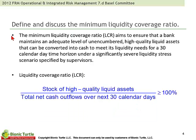The first topic in Basel III is the minimum liquidity coverage ratio. This aims to ensure that a bank maintains an adequate level of unencumbered, high-quality liquid assets that can be converted into cash to meet liquidity needs for a 30 calendar day time horizon under severity events. The liquidity coverage ratio requires the stock of high-quality liquid assets to be at least as great as the total net cash outflows over the next 30 calendar days.